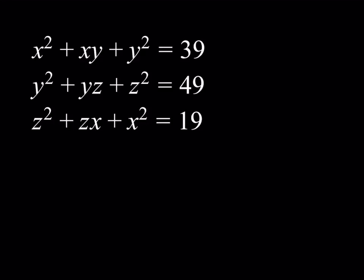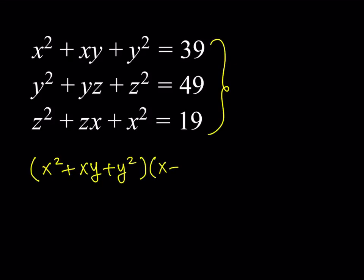If you look at x squared plus xy plus y squared — and I think we used this idea in the video from yesterday as well — you're going to get something like a difference of two cubes or the sum of two cubes. In this case, it's going to be a difference because xy is positive. So I'd like to take the first expression x squared plus xy plus y squared and multiply that by x minus y, assuming that x does not equal y. You can probably see from these equations that x, y, z are going to be different. When I multiply both sides by x minus y, we don't want to multiply by zero, obviously, and you have to do it on the right-hand side as well.